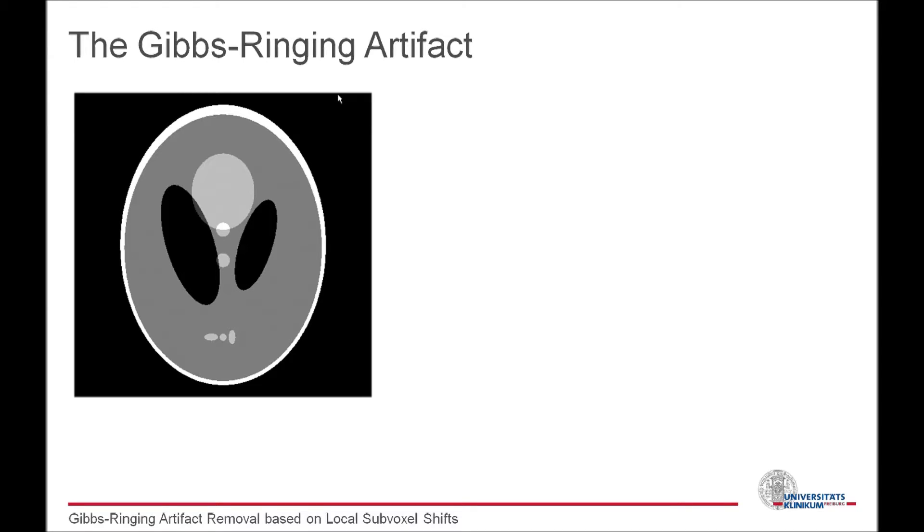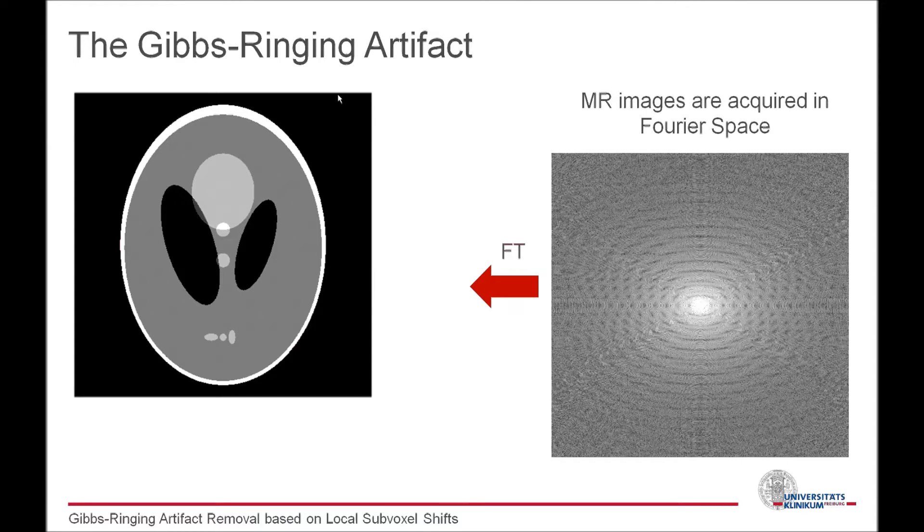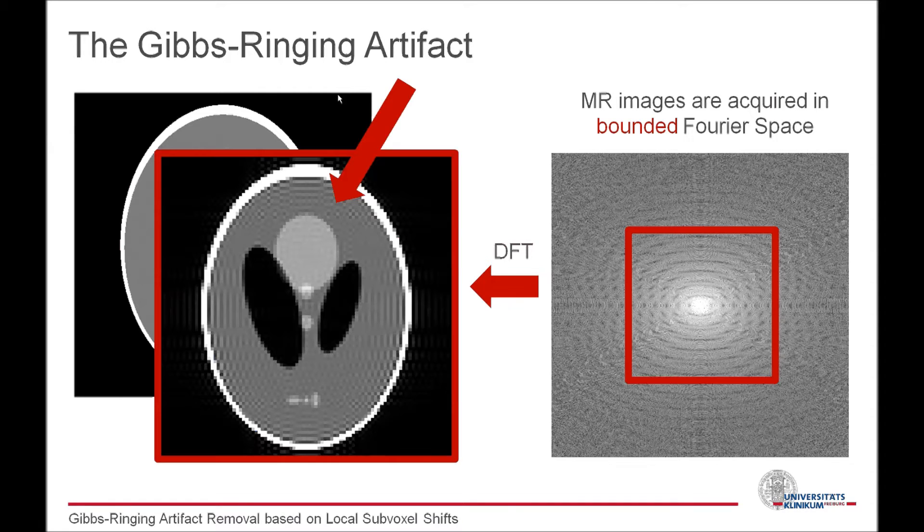So what is the Gibbs ringing artifact? In MRI, images are not taken directly, but they are reconstructed from measurements in the Fourier domain. However, we cannot acquire the infinite Fourier space, but only parts of it, and we have to reconstruct the image from this bounded domain. A quadratic bounding box results in a SYNC-like point-spread function, and this can be seen as an oscillation artifact in the vicinity of sharp edges and peaks in the reconstructed image.